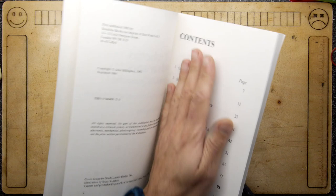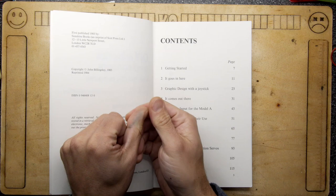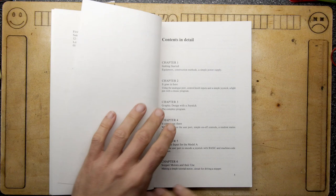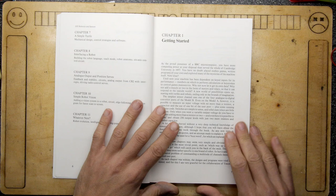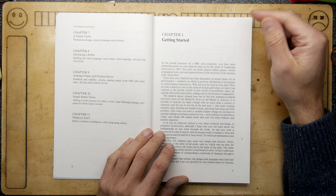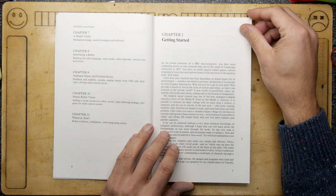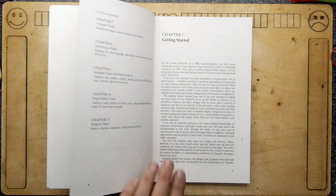It was reprinted in 1984, original print 1983. Getting started, it's obviously never been used. As the proud possessor of a BBC microcomputer, you have more computing power at your disposal than served the whole of Cambridge University in 1957. You have no doubt played endless games, written programs of your own, and explored many of the mysteries of the machine itself. Now what?